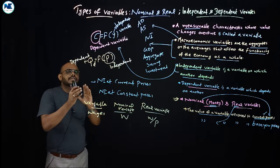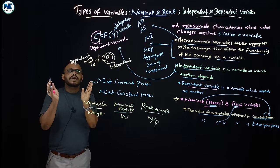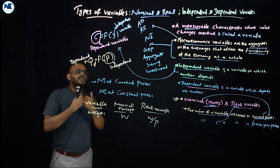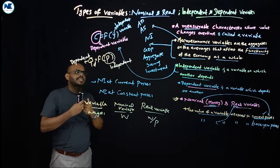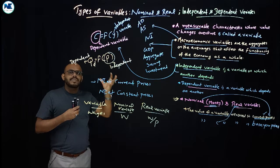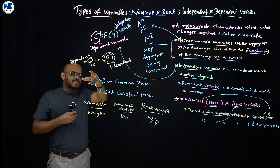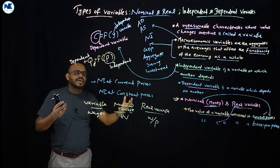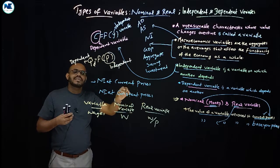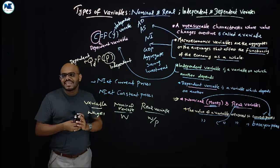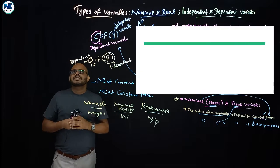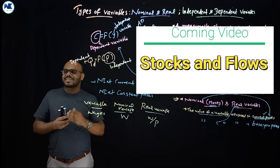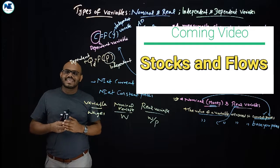So to summarize this video: we covered the meaning of variable, macroeconomic variables with examples, independent and dependent variables, nominal or money variables and real variables — their meaning, definitions, and examples. In the coming video we will discuss another type of variables: stocks and flows. Thank you.